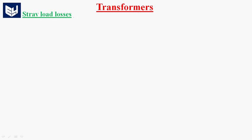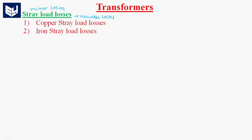Hi guys, now we are going to learn about the stray load losses in transformer. These losses are variable losses — they come under variable losses. We have two types of stray load losses. These are called minor losses in the transformer, and they are variable losses of two types.